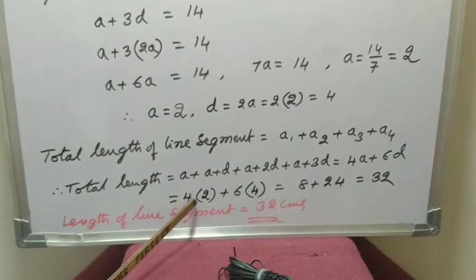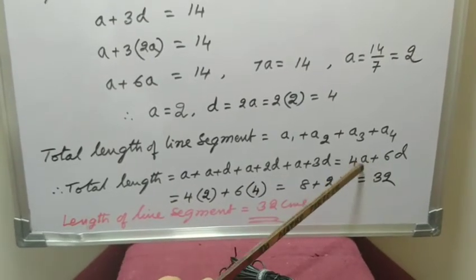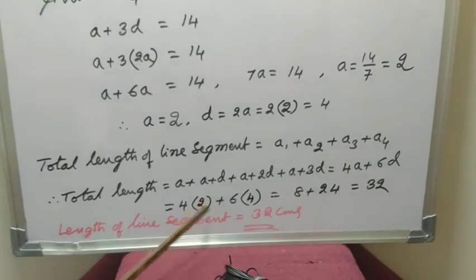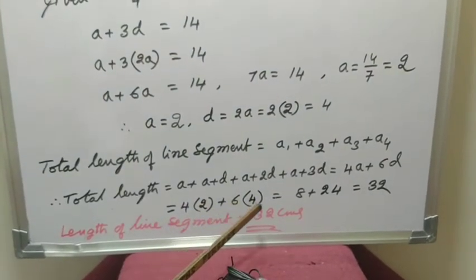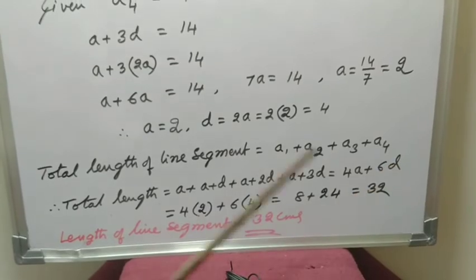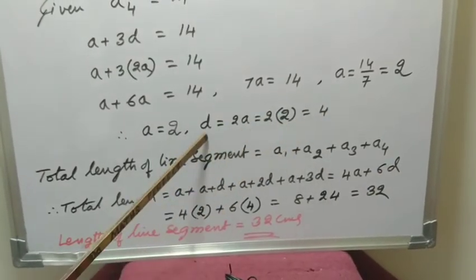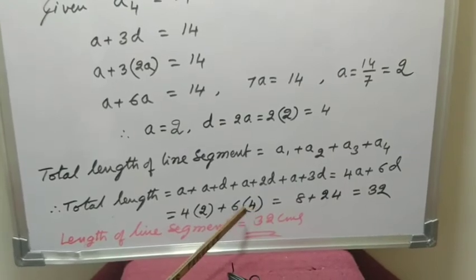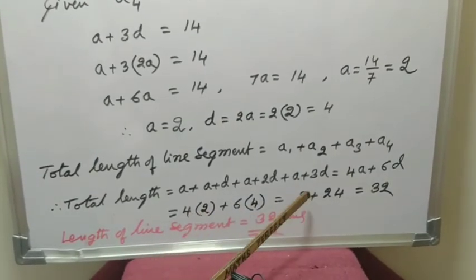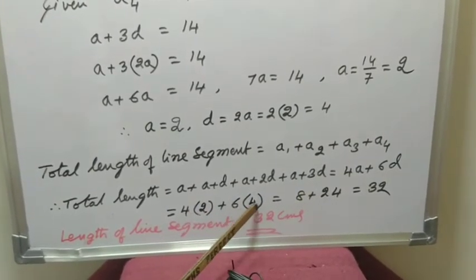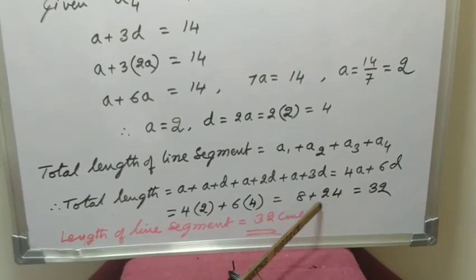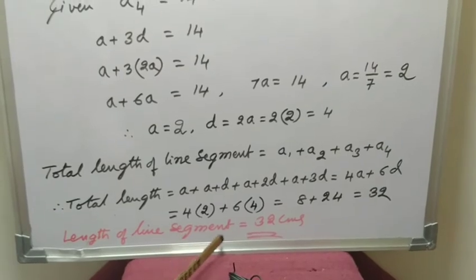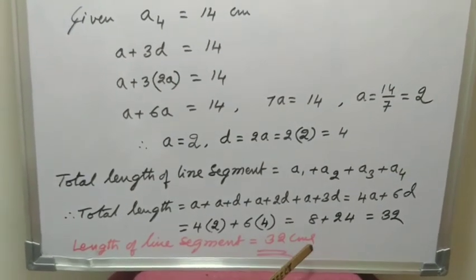Substituting A equals 2 and D equals 4: total length equals 4 times 2 plus 6 times 4, which is 8 plus 24. Therefore, the length of the line segment equals 32 centimeters.